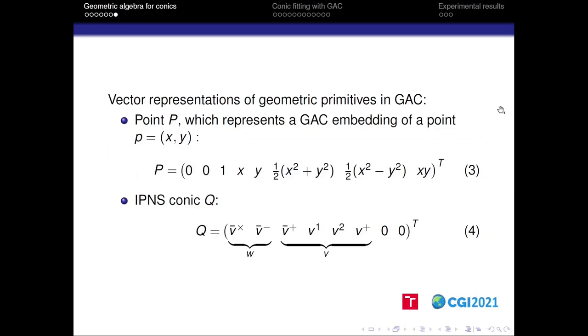All in all, we can define the geometric algebra for conics as the Clifford algebra with signature 5-3 together with the embedding we saw on the previous slide in the basis determined by matrix B. Moreover, the geometric primitives of GAC can also be represented by the vector p of this form. Also, the inner product nullspace conic q can be represented by this vector.